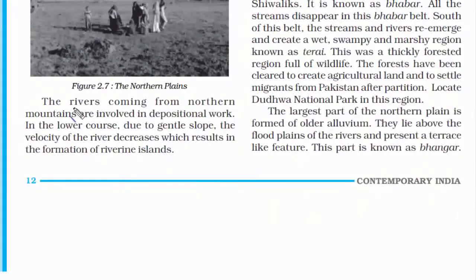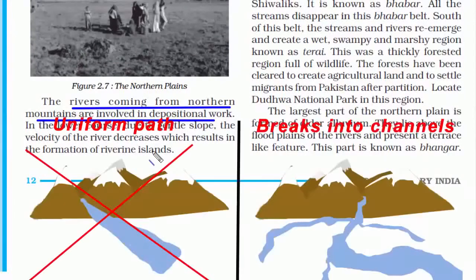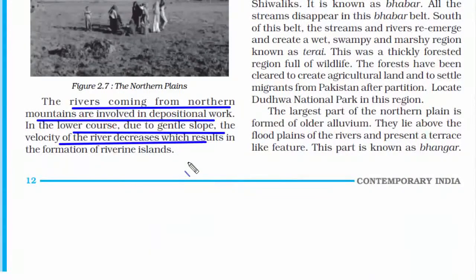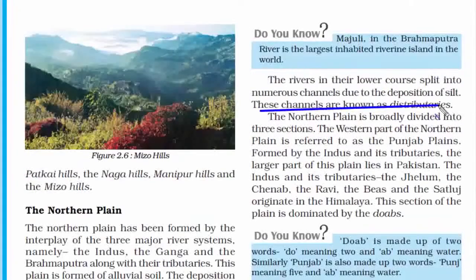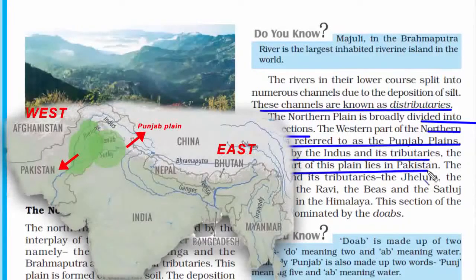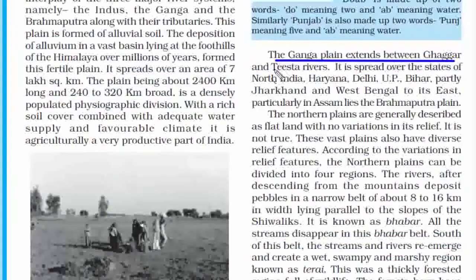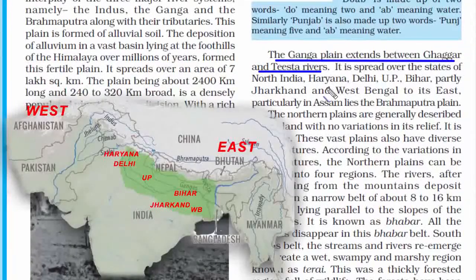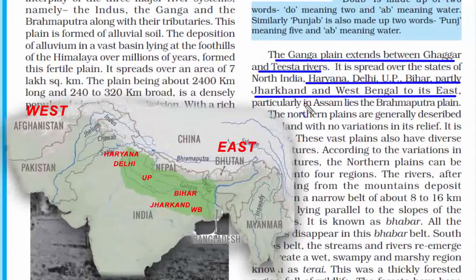When a river comes from the mountains it rushes into the plains, where it does not follow a uniform path — it breaks into different channels called distributaries. The northern plain is broadly divided into three sections. The western part is referred to as the Punjab plains, formed by the Indus and its tributaries, with the larger portion lying in Pakistan. The second section is the Ganga plain, which lies between the Ghaggar and Tista rivers, passing through Haryana, Delhi, UP, Bihar, part of Jharkhand, and West Bengal, draining into the Bay of Bengal.